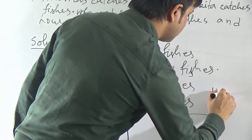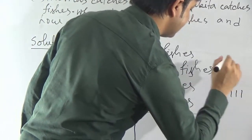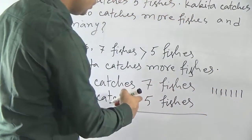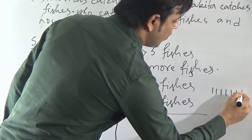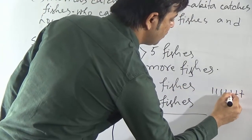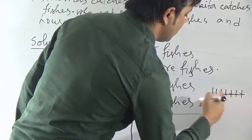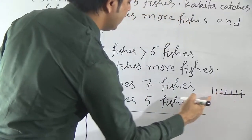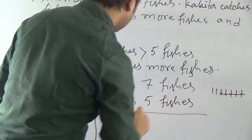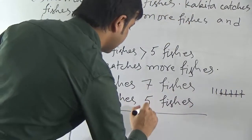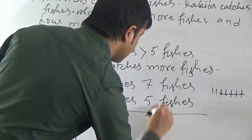If we subtract 5 from 7 — I show 7 sticks: 1, 2, 3, 4, 5, 6, 7. Now we subtract 5: 1, 2, 3, 4, 5. How many are left? Only 2: 1, 2. So if we subtract 5 from 7, we get 2.